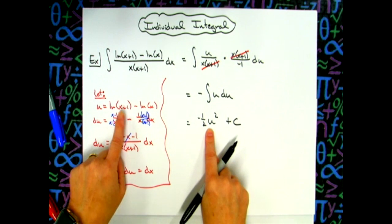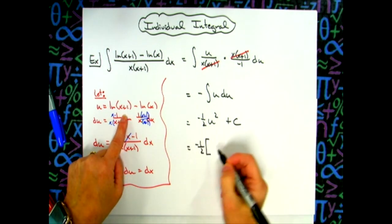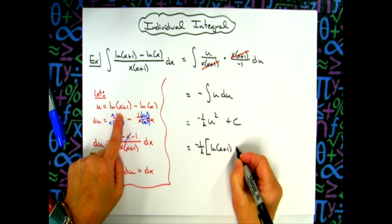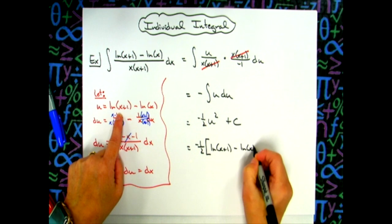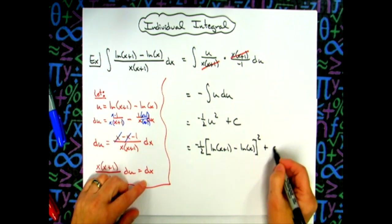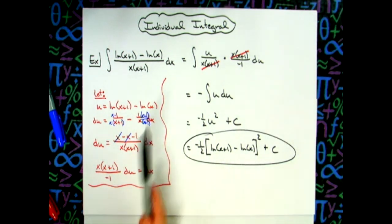Replacing u for a final answer, I'll have a negative 1 half. And then let's go times the quantity of natural log of x plus 1 minus natural log of x. And then all of that raised to the second power and then plus c.